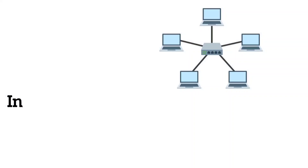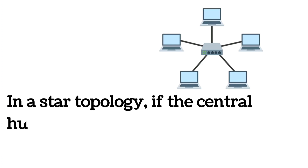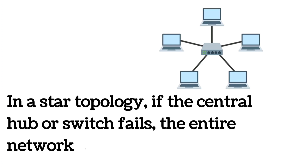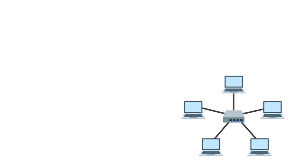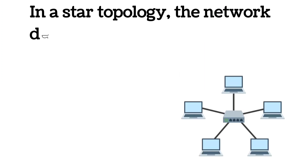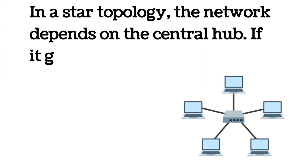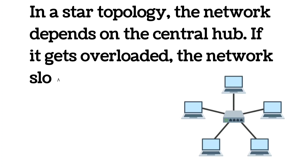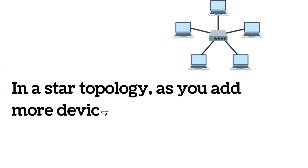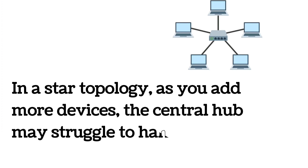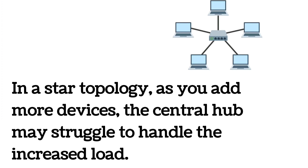Disadvantages of star topology: if the central hub or switch fails, the entire network stops working. The network depends on the central hub — if it gets overloaded, the network slows down. As more devices are added, the central hub may struggle to handle the increased load.